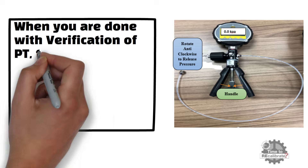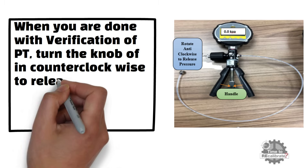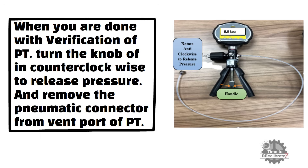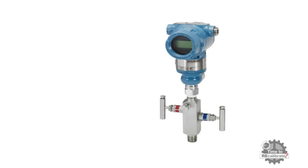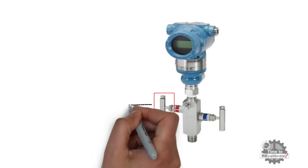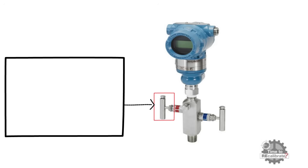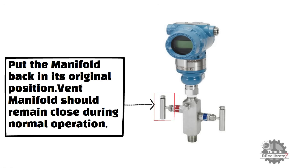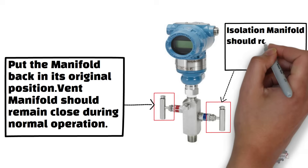When you have finished verification of the pressure transmitter, turn the little knob of the pressure calibrator anticlockwise in order to release the pressure. Remove the 1/4-inch connector from the vent port of the pressure transmitter. Close the vent port of the pressure transmitter by using the original fitting. Now put the manifolds back in their original position. The vent manifold should remain closed during normal operation, and the isolation manifold should remain open during normal operation.